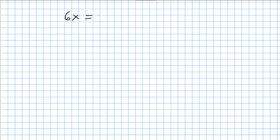In this video, we want to solve 6x ≡ 15 (mod 21). First, check if GCD(6, 21) = 1, but here it's equal to 3. However, 3 divides 15, so we know the solution exists.